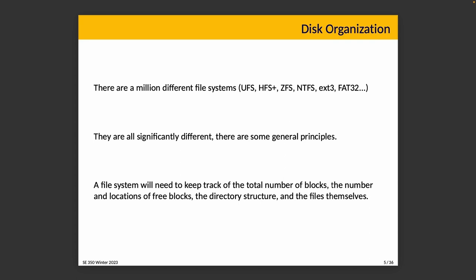That's all kind of abstract. We'll also talk about disk organization more generally. There are a million different file systems: UFS, HFS Plus, which was used in macOS before APFS replaced it, ZFS, NTFS, EXT3, FAT32 — all of them. They're all different in various ways, and there are important design decisions that go into each, but it's not something we're going to have time to cover in detail here.